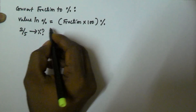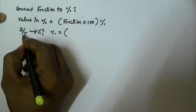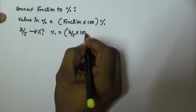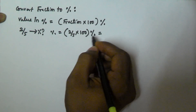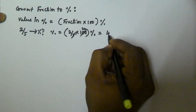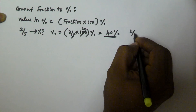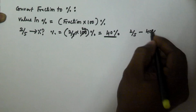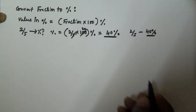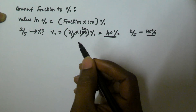Let's convert 2/5 into percentage. The value in percentage is equal to the given fraction 2/5 multiplied by 100. That gives us 20 times 2, which equals 40. So the fraction 2/5 is equal to 40 percent.